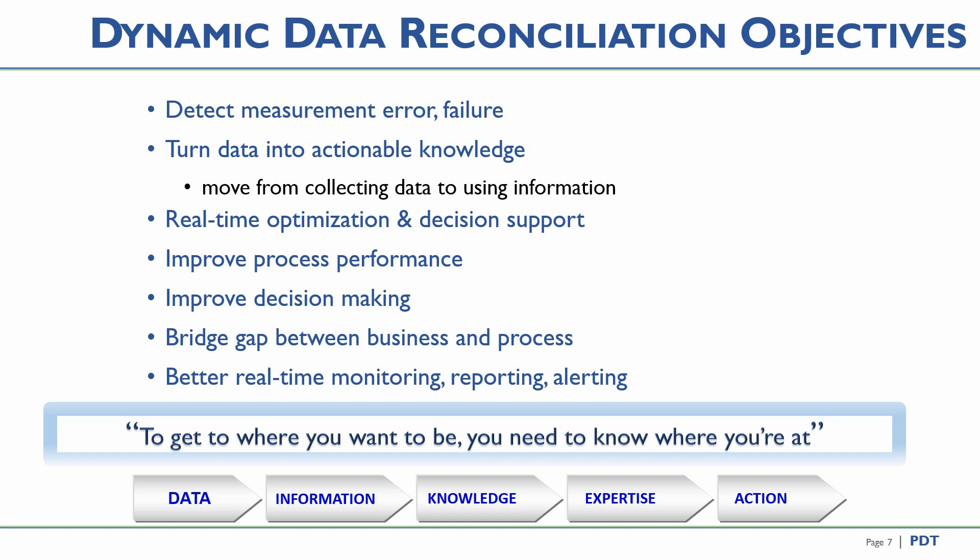In order to take reasonable process action, one needs to know where the process is currently operating without being fooled by measurements that do not add up. Dynamic data reconciliation fits a first principles model through the data to detect and correct measurement error by trying thousands of trials each minute. Making sense of the data moves the bar from collecting data to understanding the current process operation. This supports suitable actions such as better process decisions, accurate real-time optimization, and better monitoring, reporting, and alerting.